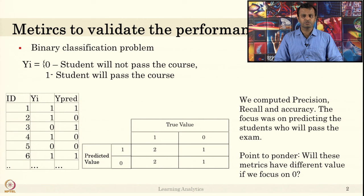The focus was on predicting students who will pass the exam. The true positive focus is on the students who will pass the exam. If I have focus on 0, that is who will not pass the exam, what will be the change?